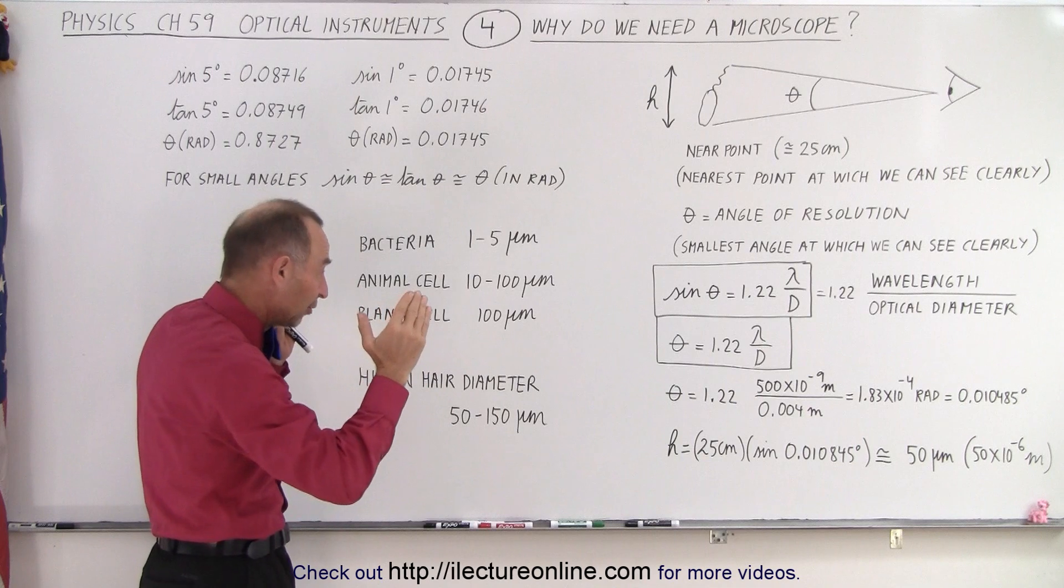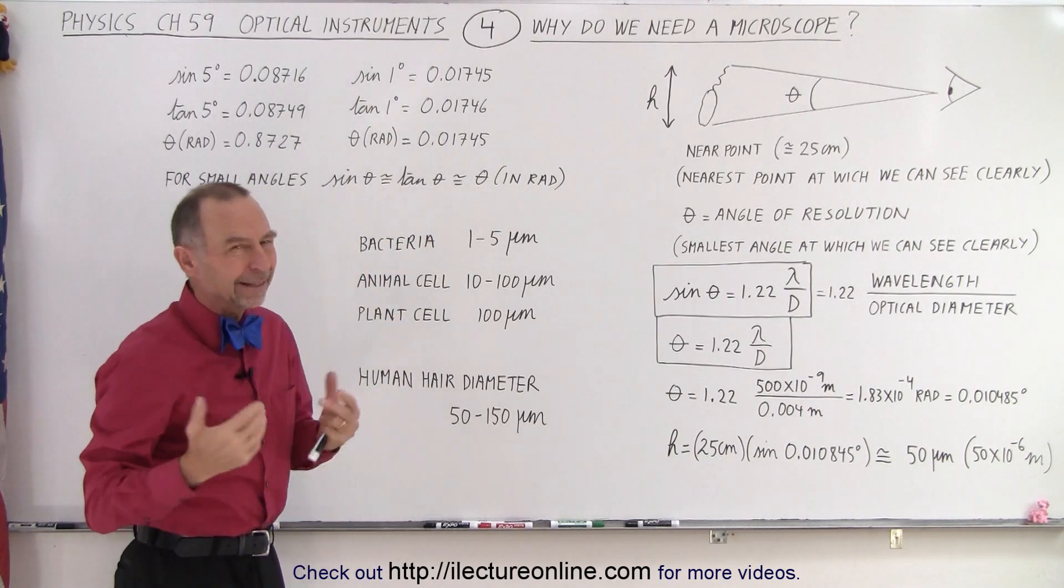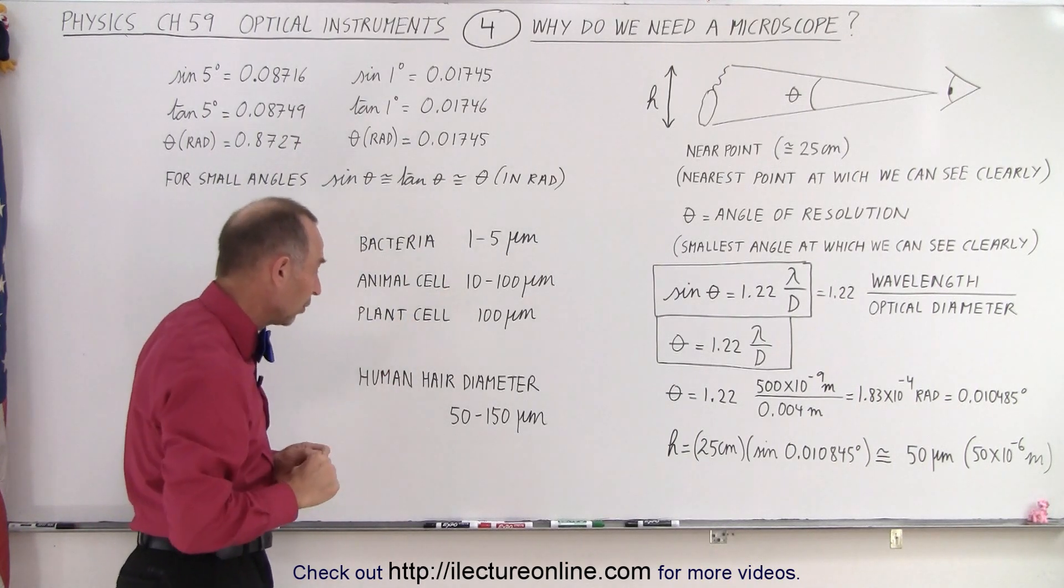So if we want to be able to see bacteria or even viruses, which are smaller than bacteria, or cells in the structure of cells, we need something that allows us to see even smaller than that. And so our eye cannot do that, therefore we need a microscope to be able to zero in to things that are even smaller than that.